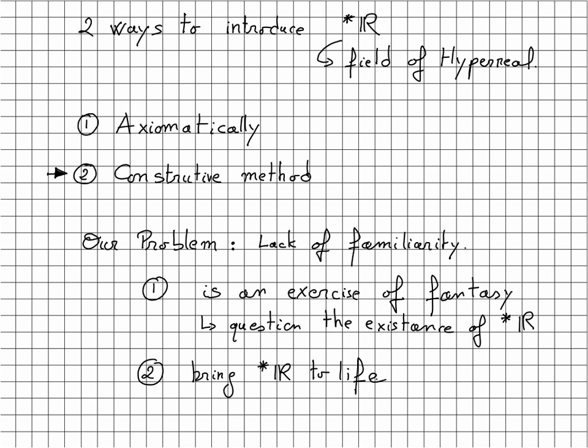There are two ways to introduce the field of hyperreal numbers that we write star R. The first is axiomatic and the second is constructive. Our problem is mostly the lack of familiarity and intuition with the hyperreal numbers, which may often make you feel that an axiomatic definition of the hyperreal is an exercise of fantasy. And you quickly come to question the existence of star R.